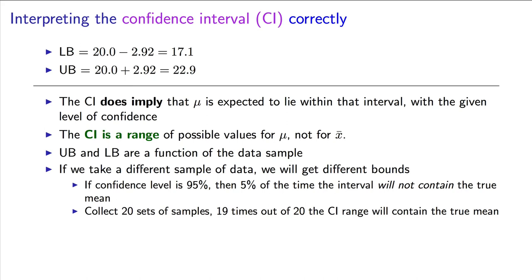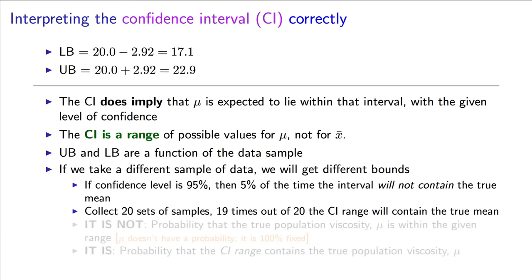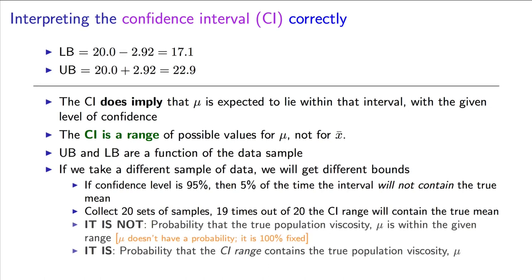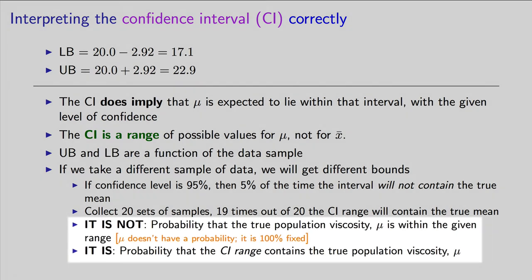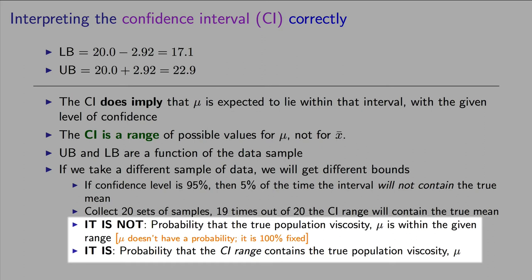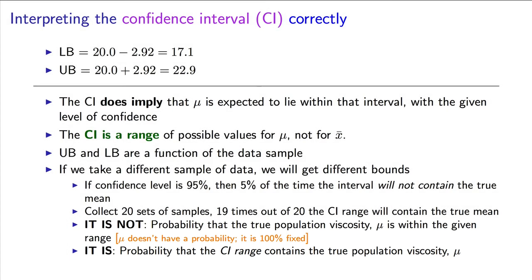Here is a subtle distinction, which is a peculiarity of the English language, but it is important to get right. The confidence interval is not the probability that the true parameter lies within the range. Rather, it is the probability that the range contains the true parameter. The reason why it is not the first case is because the parameter has no probability associated with it. It is 100% fixed, we just don't know what its value is.